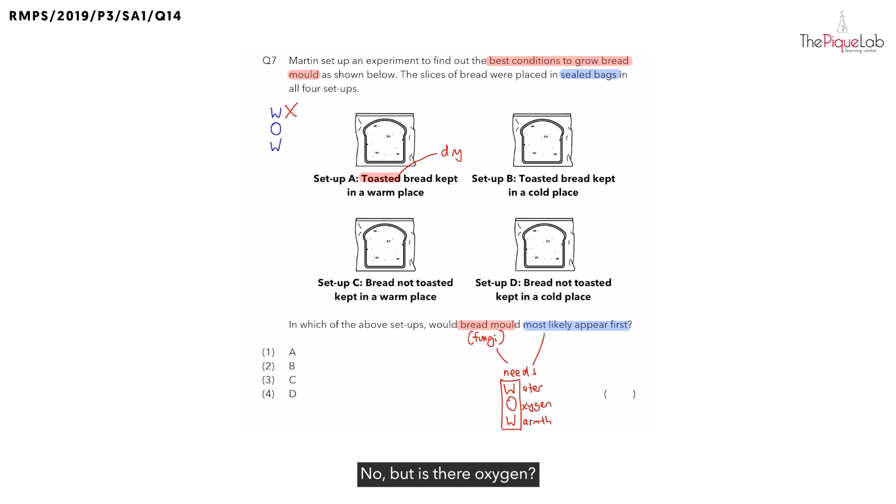But is there oxygen? Now, I know what some of you are thinking. Since the slices of bread were placed in sealed bags, you would think that there is no oxygen. But is that true? No. It is true when it's sealed, oxygen from the surroundings cannot go in. But is there still oxygen inside the bag? Yes. So we should put a tick. And is there warmth? Yes. How can you tell? They already said it was placed in a warm place. So we can put a tick.